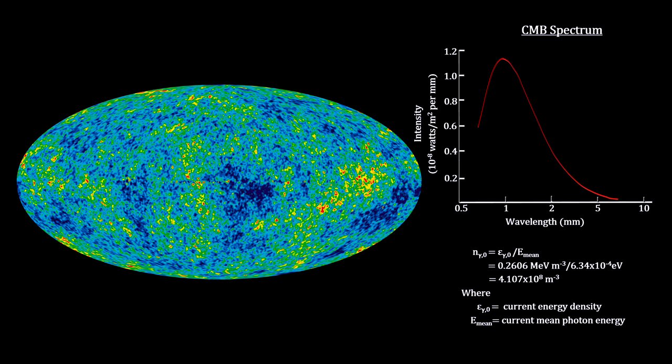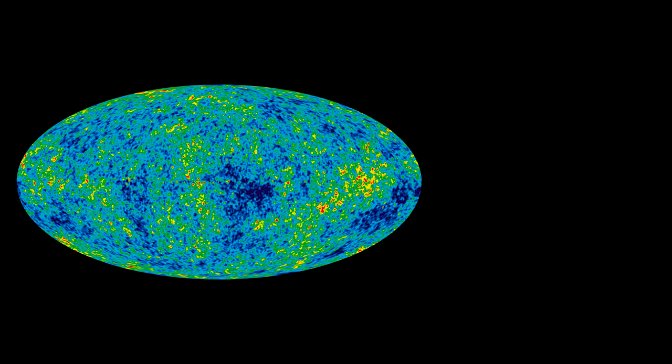The blackbody radiation formula also gives us the number density of CMB photons. There are over 400 million of them in every cubic meter of space throughout the cosmos. This is 1,000 times more than all the photons from all the starlight ever created by all the stars and all the galaxies for all the billions of years that stars have been shining.